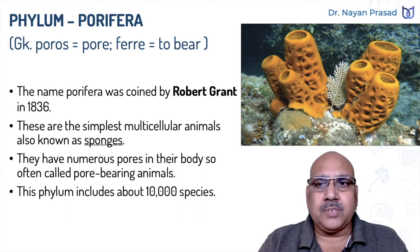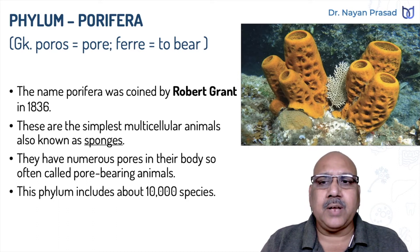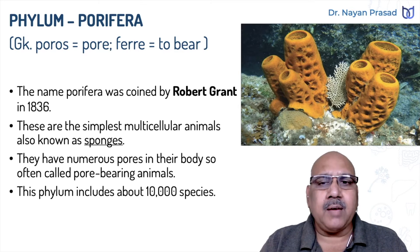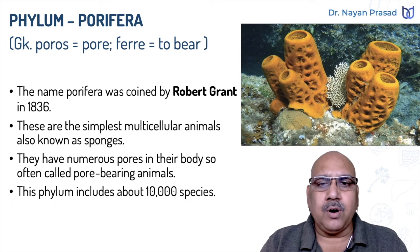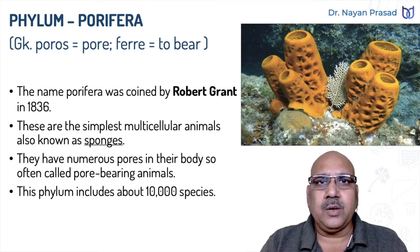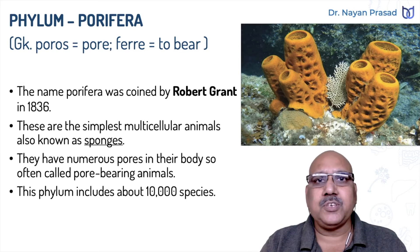The members of this group are the simplest multicellular animals. These are also called sponges. They have numerous pores in their body, so often called pore-bearing animals. This phylum includes about 10,000 different species.